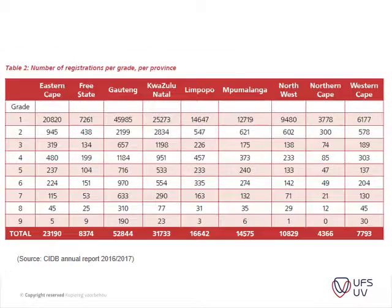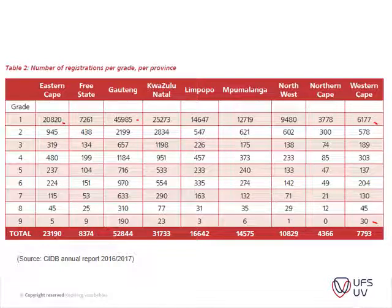The data is broken down by province — Eastern Cape, Free State, Gauteng, and so on. Gauteng by far has the highest number of contractors, followed by the Western Cape. Interestingly, while Gauteng leads in new up-and-coming contractors, when you look at larger contractors the Western Cape has quite a lot compared to other provinces. You can also check if a latest CIDB report has been published to update this information.